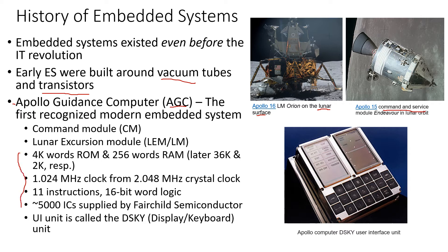The AGC was a very basic system. The initial version had only 4K words of ROM and 256 words of RAM. Later versions had 36K and 2K of ROM and RAM respectively. It ran on a 1 MHz clock generated from a 2 MHz crystal, had only 11 instructions, and was a 16-bit computer. It had around 5,000 ICs supplied by Fairchild Semiconductors.